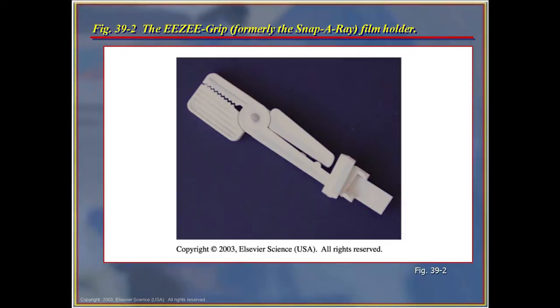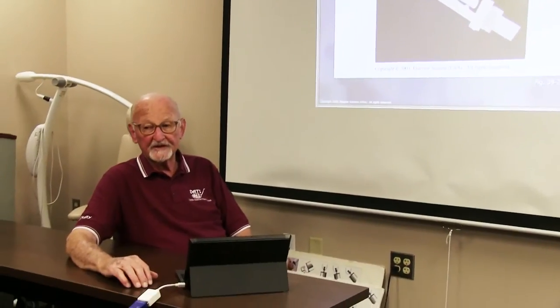This is called the SNAP Array. The SNAP Array is one of my favorites and it's used extensively with children, because the XEP system, which we'll detail, is used routinely in adults. It is an uncomfortable procedure for children to bite upon, and many times we'll use the SNAP Array. The film is placed in the SNAP Array and the patient bites down on it. You don't get quite as accurate a presentation as you do with the XEP, but it's quite acceptable when utilized appropriately.